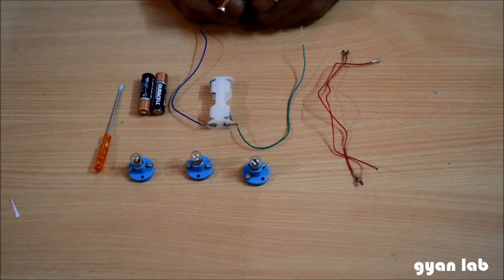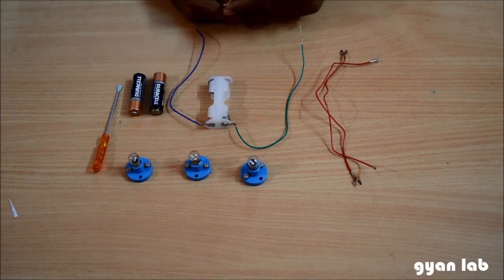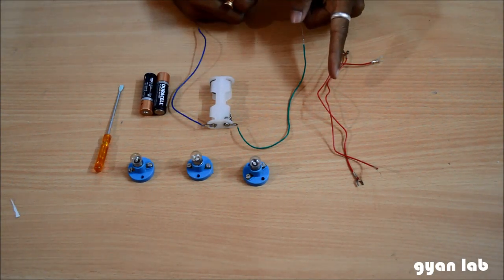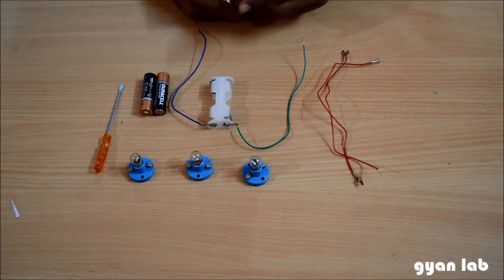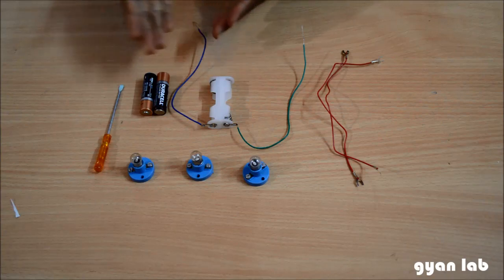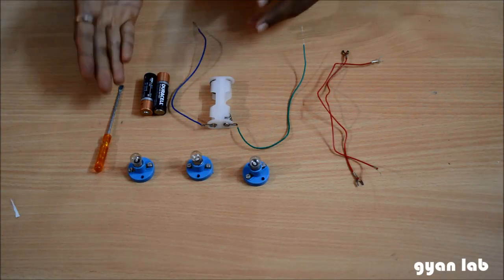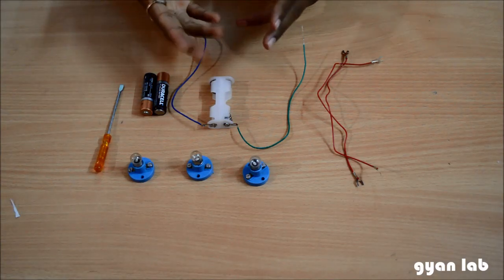For that what we need is a combination of three bulbs with bulb holders as we can see here, a couple of connecting wires, battery holder and a couple of batteries as a power source. And we are going to need a screwdriver to put in all the wires.